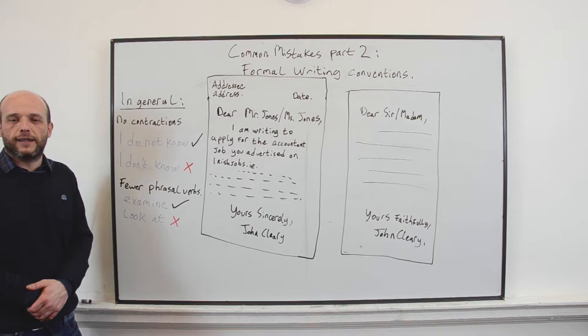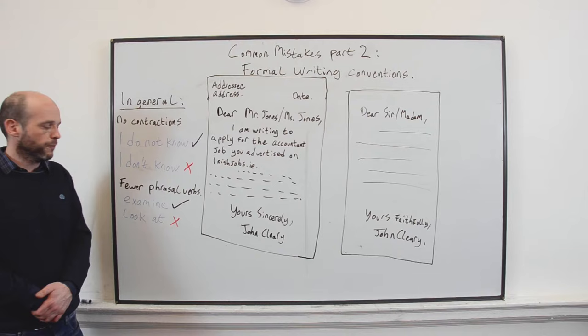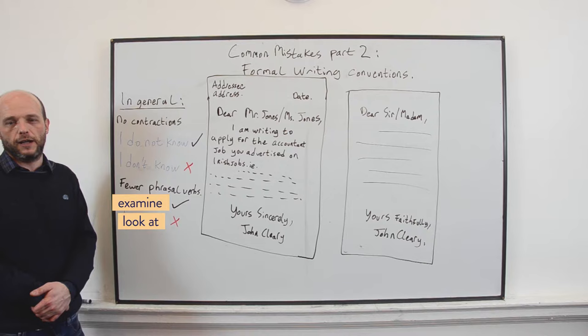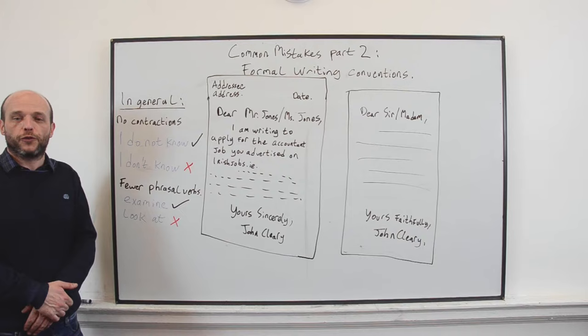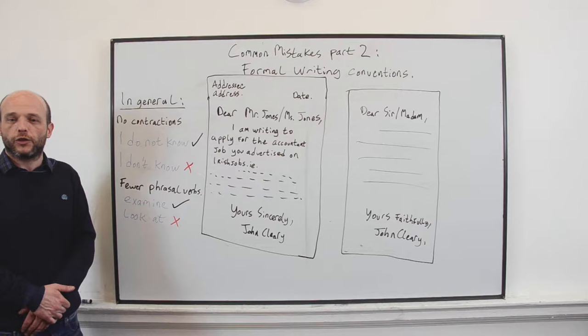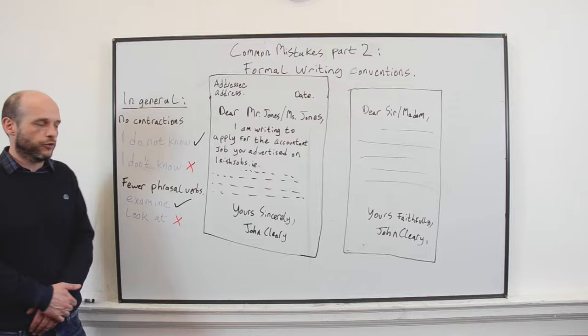The second key point is we use fewer phrasal verbs when we write formally in English. So we might say to examine a problem instead of to look at a problem. Of course, you can use phrasal verbs in formal writing. It's just that normally we prefer the more formal words. This is good news for speakers of Latin languages like Spanish or Portuguese, because it means you can use a lot of the Latin cognates which are similar to words in your own language.